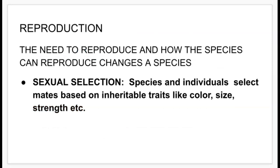Reproduction itself — the need to reproduce and how a species can reproduce — changes a species. Remember that reproduction is to ensure the survival of a species or population. When we talk about reproducing, we come to the idea of sexual selection: when species and individuals select mates based on inheritable traits like color, size, and strength.